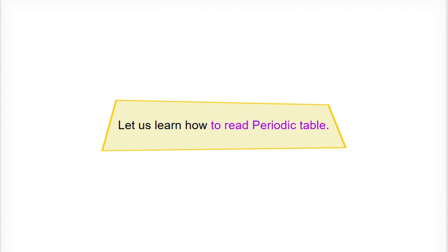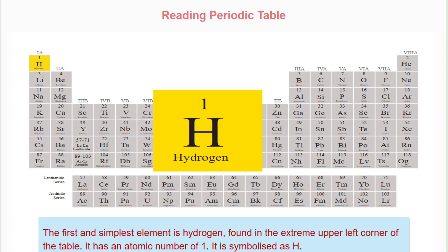Let us learn how to read the periodic table. The first and simplest element is hydrogen, found in the extreme upper left corner of the table. It has an atomic number of 1 and is symbolized as H.